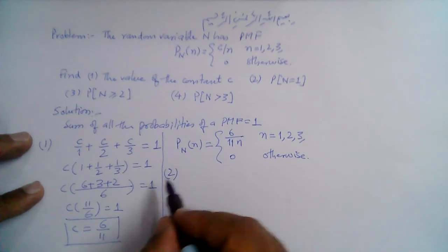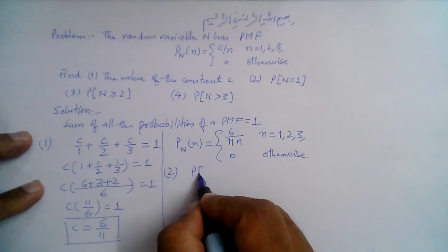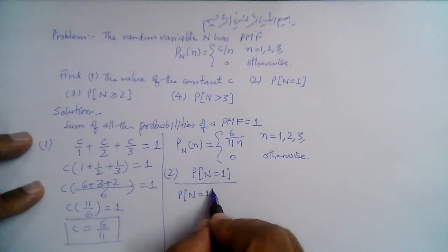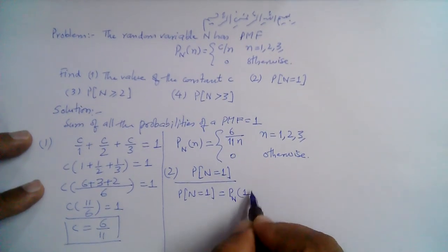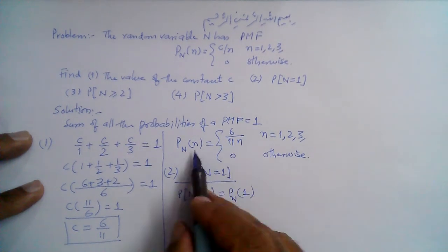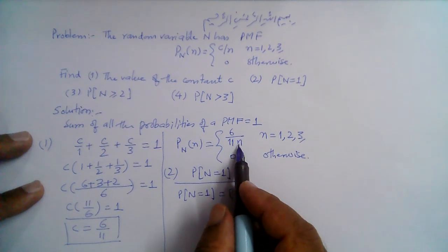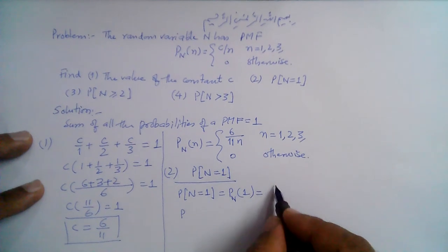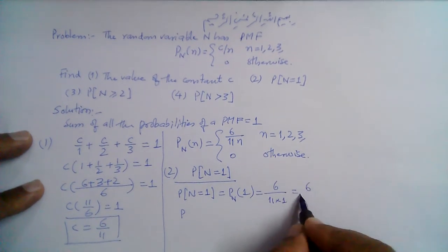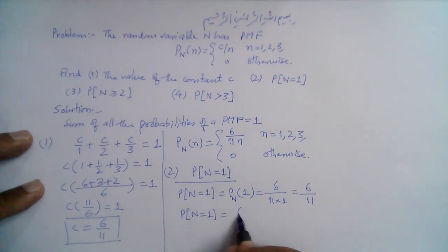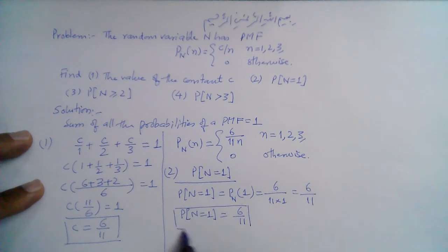For part 2, the probability that N equals 1. When n = 1, the probability is simply 6/11 multiplied by 1/n, so 6/11 times 1/1, which equals 6/11. The probability that N equals 1 is 6/11.